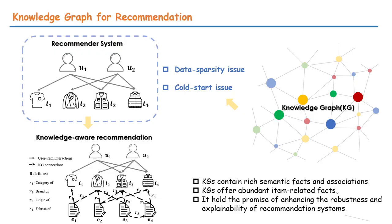Traditional recommendations, like collaborative filtering, rely on historical interactive data, which brings some problems such as data-sparsity issues and cold-start issues. Knowledge graphs contain rich semantic facts and associations and offer abundant item-related facts.